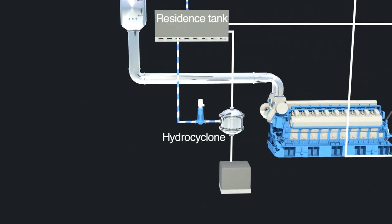The water treatment used is a hydrocyclone which separates particles from the water. After the scrubber, the water is led into the residence tank, then from the unclean side of the residence tank and pumped into the water treatment unit.